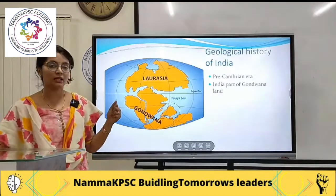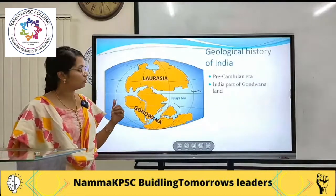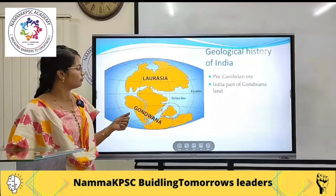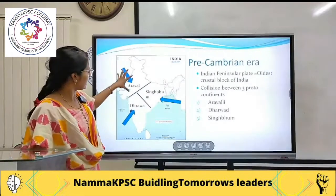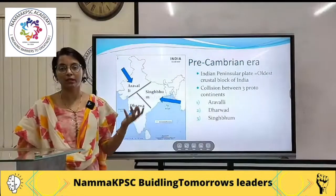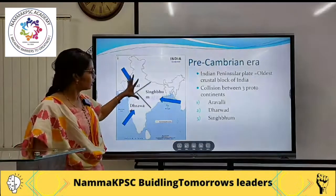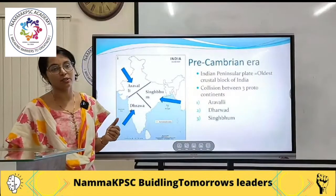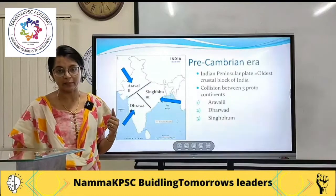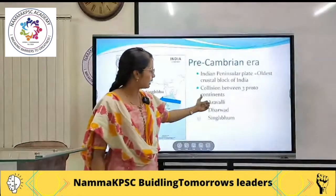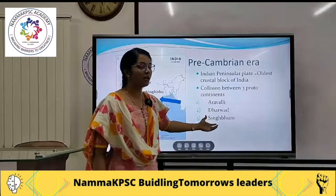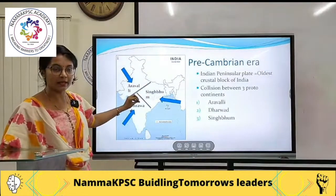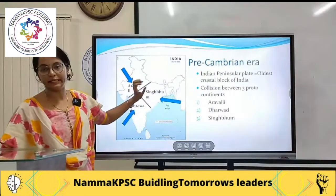In the pre-Cambrian era, Rodinia split. We had seen that there were three proto-continents which actually collided in order to form your actual Peninsular India. The segments are Aravalli, Dharwad, and Singbhoom. These three proto-continents collide and create the Peninsular India.